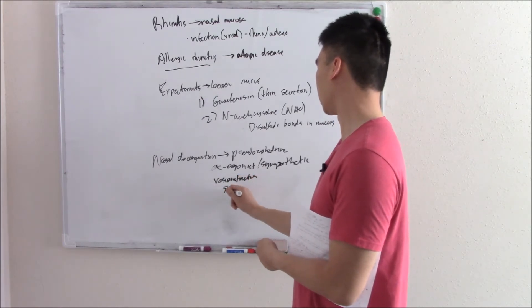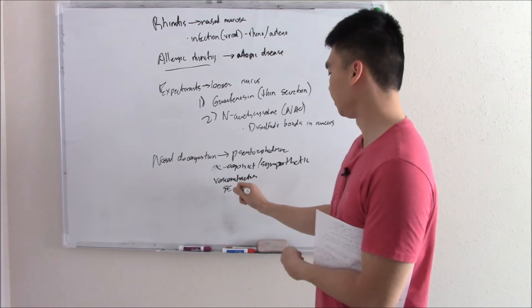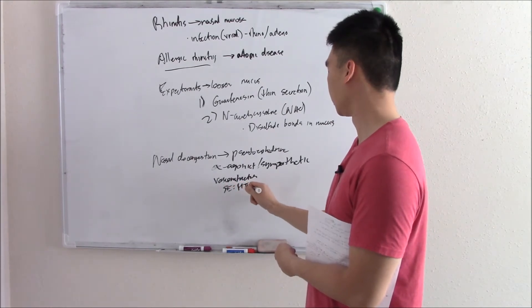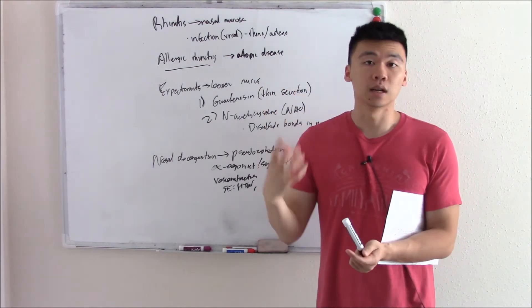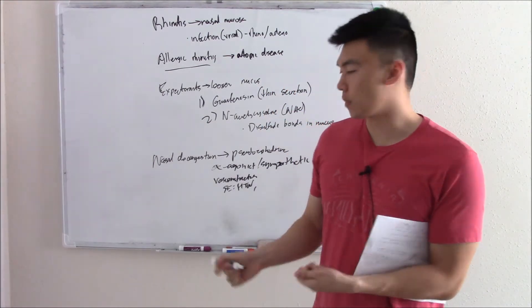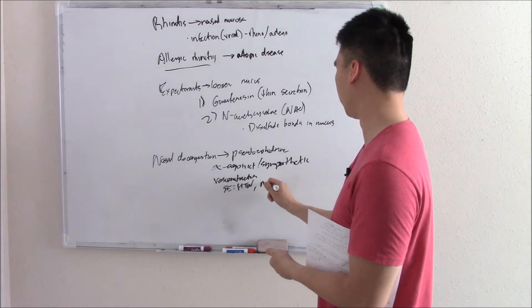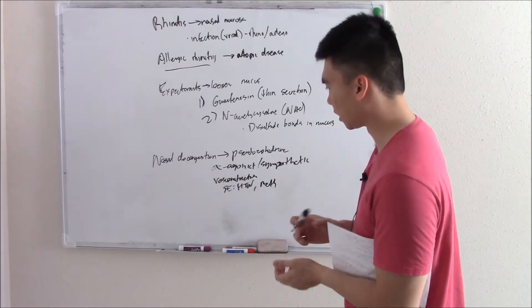Some side effects. You can vasoconstrict too much. You can get hypertension. And also because it works on your sympathetic system, it's a CNS stimulant. It's a stimulant. And it can be used illicitly to make methamphetamine. So just be careful of that.